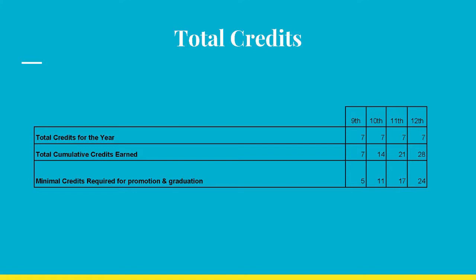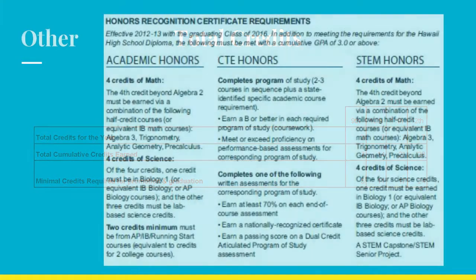In order to be promoted to the next grade, a 9th grader must earn a minimum of five credits, a 10th grader 11 credits, and an 11th grader 17 credits.